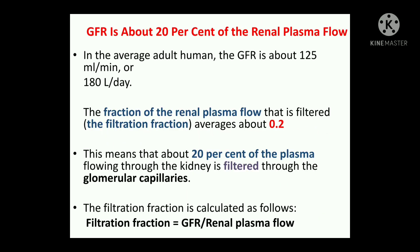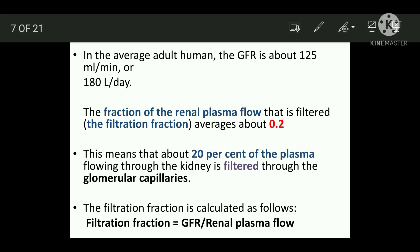GFR is about 20% of the renal plasma flow. Another question which can be asked is: calculate the filtration fraction. The normal value of GFR is around 125 milliliters per minute or 180 liters per day. So the filtration fraction of the renal plasma flow that is filtered averages about 0.2.